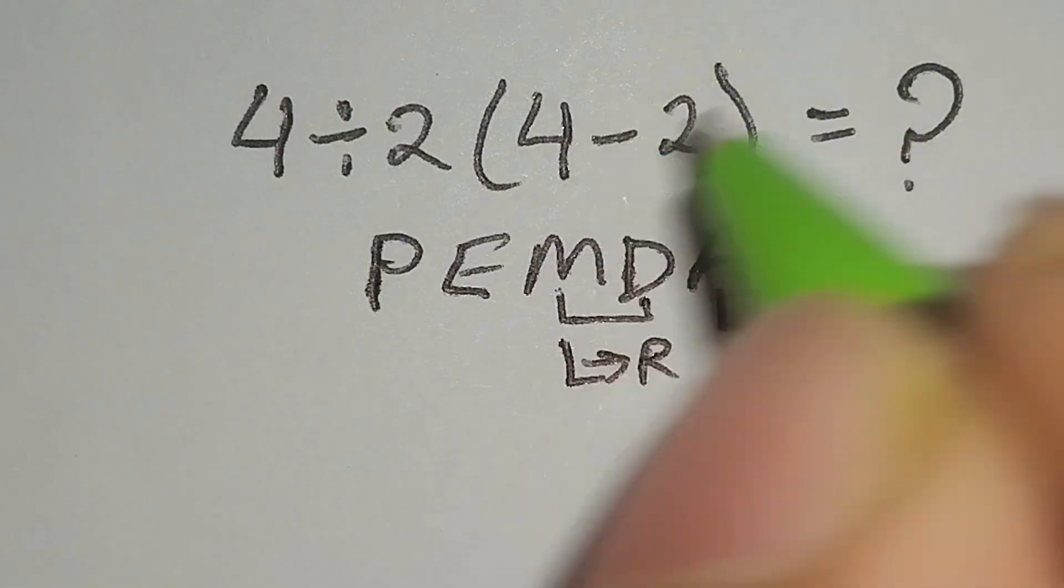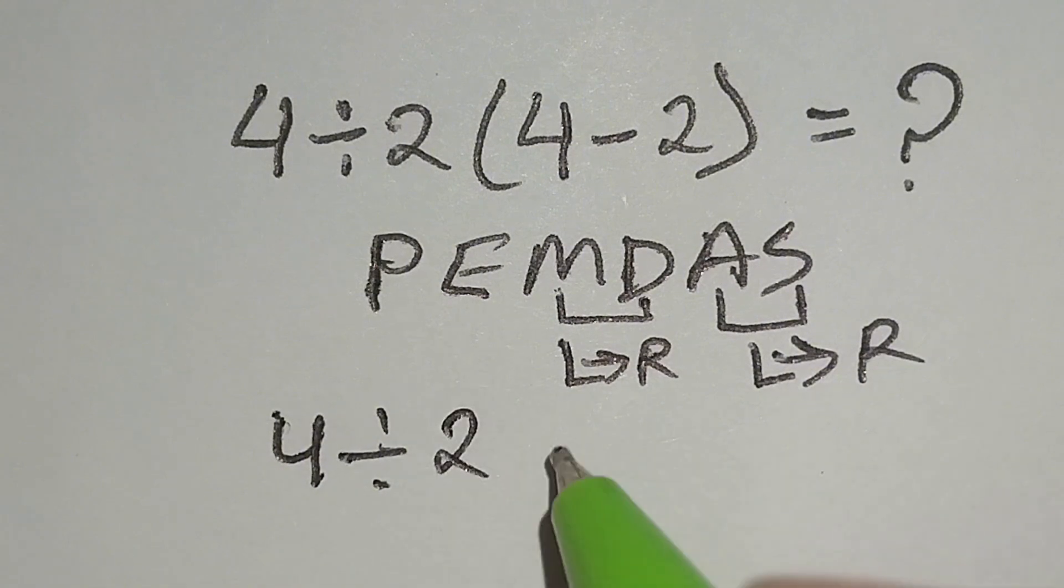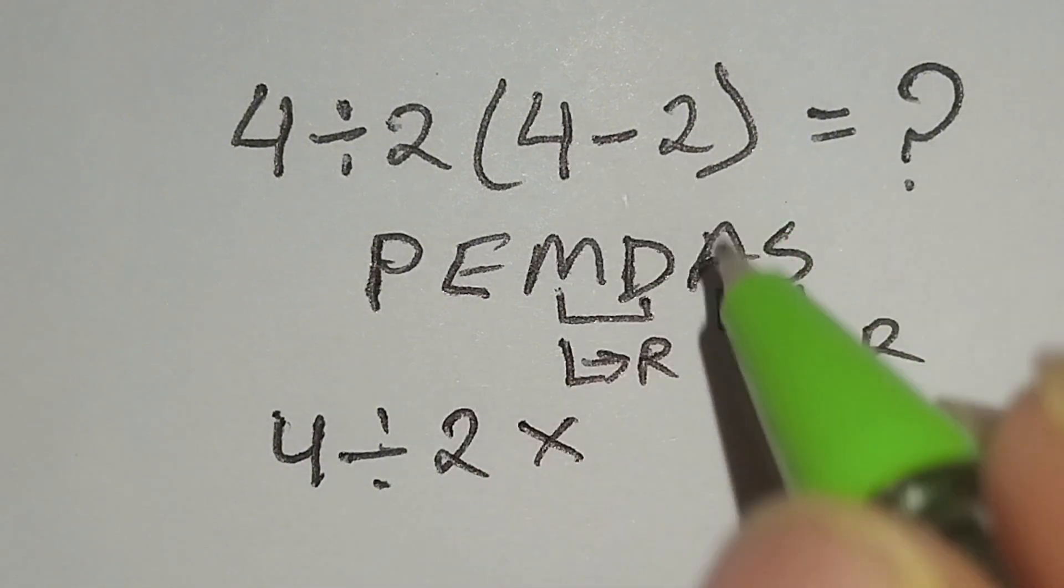Therefore, first we have to work with this parenthesis. Here, 4 divided by 2 multiply by 4 minus 2 gives us 2.